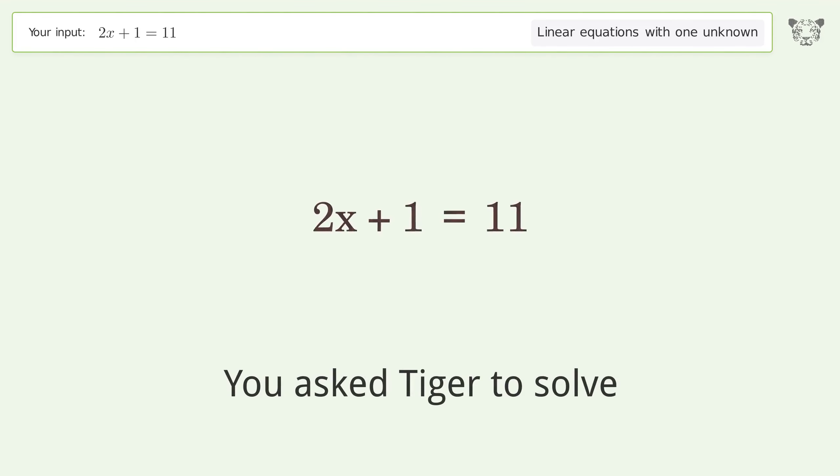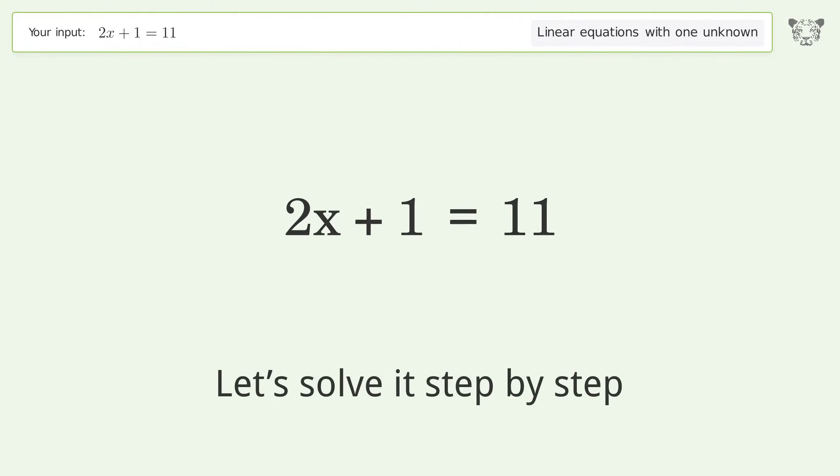You asked Tiger to solve. This deals with linear equations with one unknown. The final result is x equals 5. Let's solve it step by step.